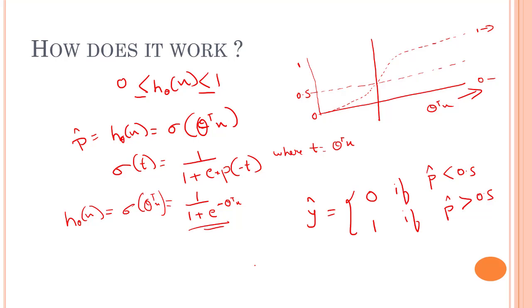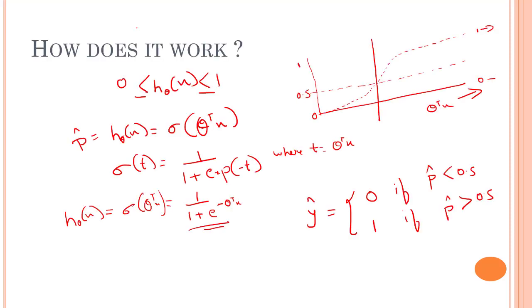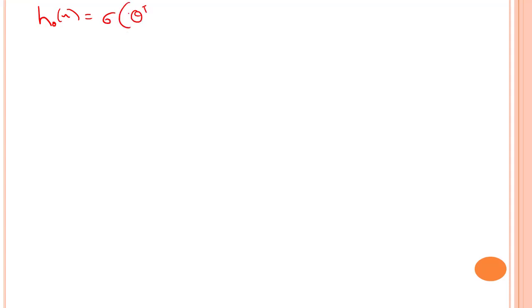Let's look into the cost function — what's exactly the cost function of our hypothesis. So let's represent our hypothesis first of all. We have our hypothesis h(θ, x), which is nothing but sigmoid(θ, x).